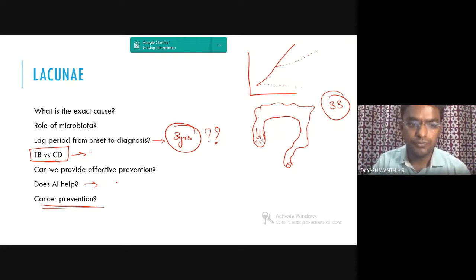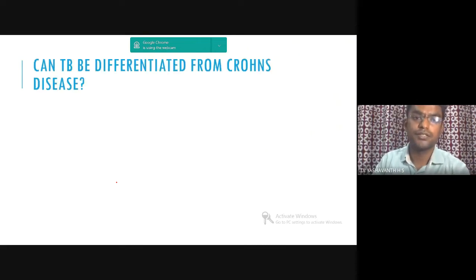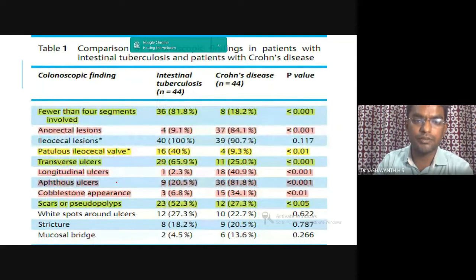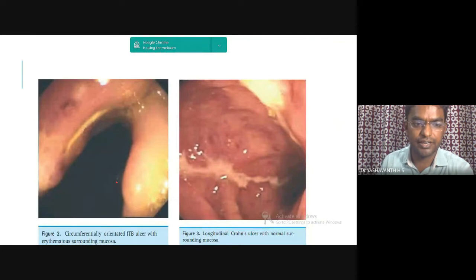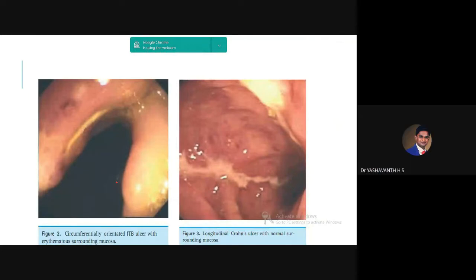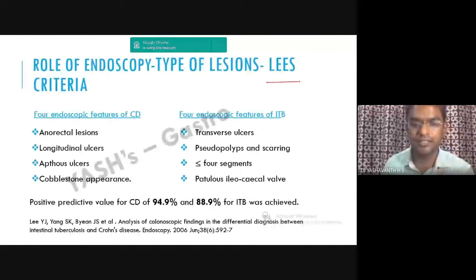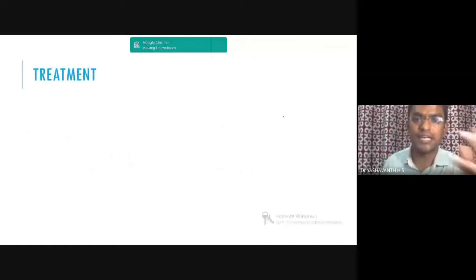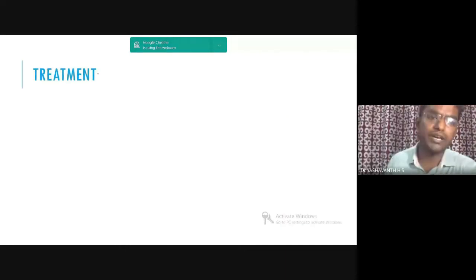There are multiple factors that might give an answer to the TB versus Crohn's question. Based on Lee et al., if these four criteria are present, you can think it's Crohn's; if those four are present, it's TB. But in practical clinical practice, this is not much help. And treatment — we have many drugs. With biologics now having very good efficacy, what we try to do in inflammatory bowel disease, rheumatoid arthritis, or any autoimmune disease is dampen the inflammation.